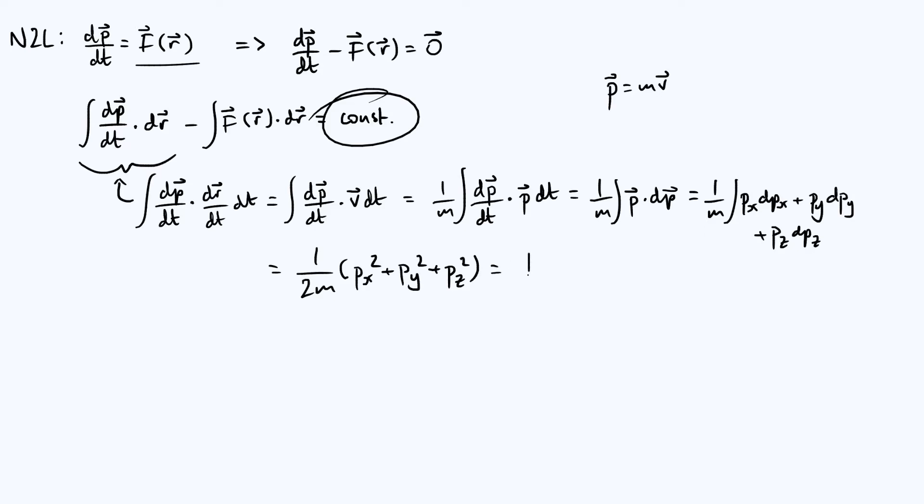So I can write that as p²/(2m). You may already recognize that as just the typical expression for the kinetic energy. If you prefer, you can actually rewrite that as just ½mv², which might be more familiar, just using the fact that p = mv.